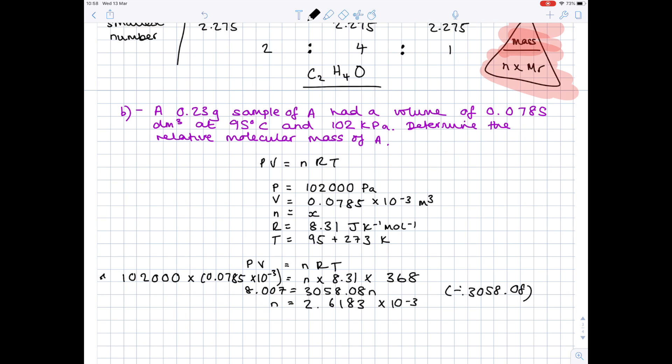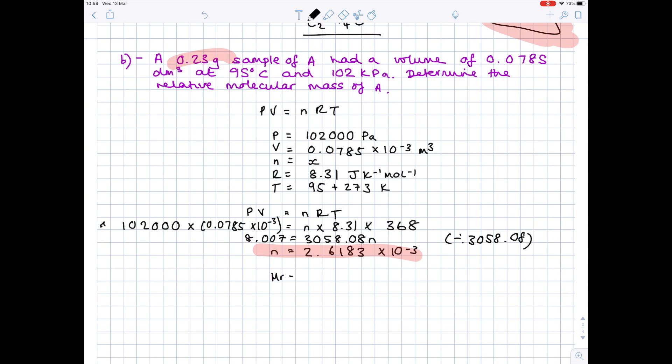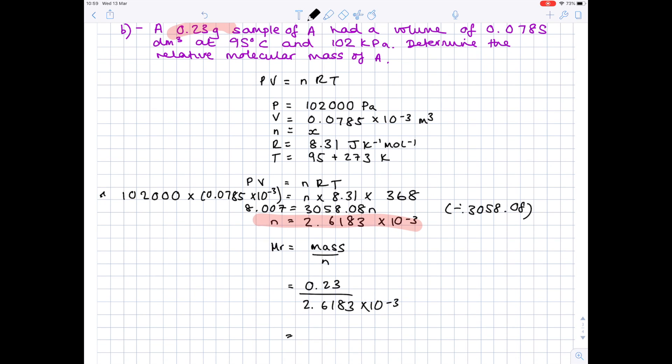And now we're ready to find our relative molecular mass. We've been given a mass in the question, which is 0.23 grams. We have the number of moles, which we've just calculated. So we're ready to find the MR of this compound. Let's write out the formula: MR equals mass divided by number of moles. Our mass was given as 0.23. Our number of moles is 2.6183 times 10 to the minus 3. When you've popped that into your calculator, you get a value, which is 87.8 grams. And that is your answer.